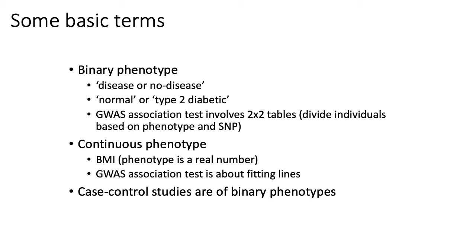Generally speaking, if you are looking at binary phenotypes — those are cases like case-control studies where you can divide people into a healthy group and a not-healthy group, like normal or type 2 diabetic — then typically you're using tests like Fisher's exact test that look at the distribution of people with a genetic variant and how that relates to the distribution of people who have a given trait.